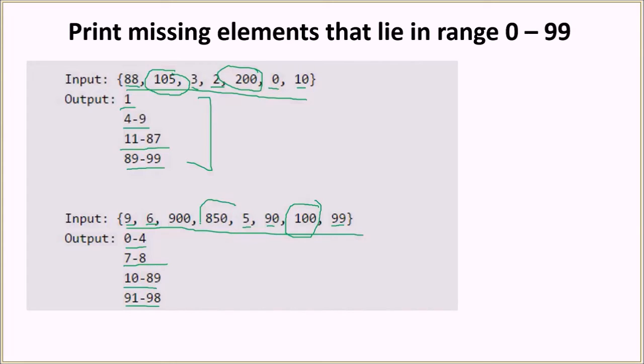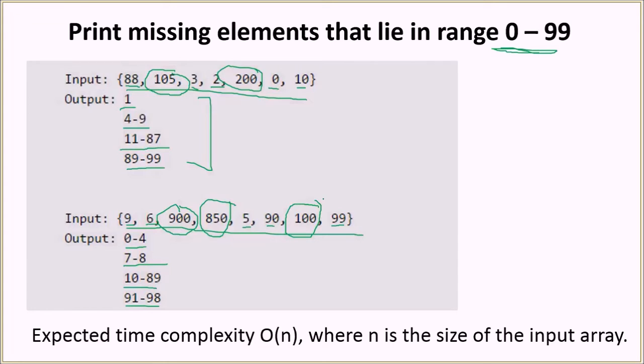The elements 100, 850, and 900 do not lie in the range of 0 to 99, so we just ignore them. The expected time complexity is order of n where n is the size of the input array, so we are looking at the traversal of the array only once.